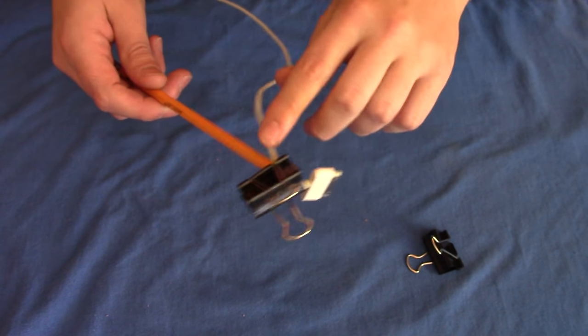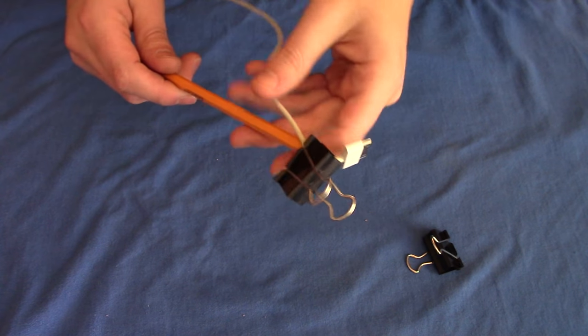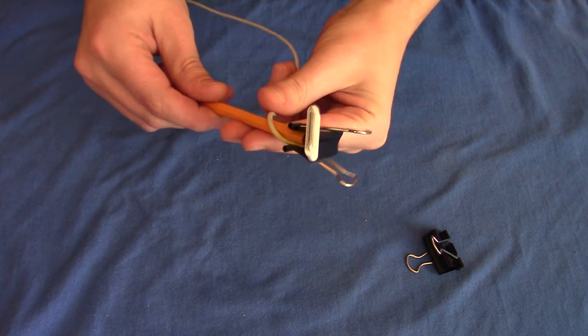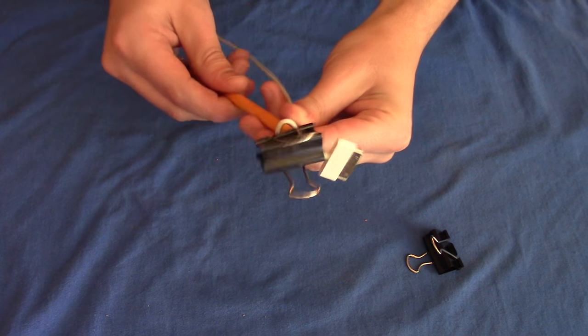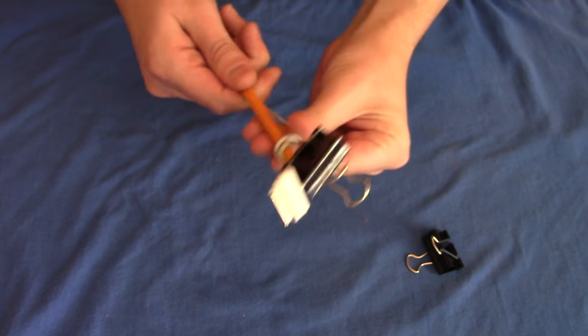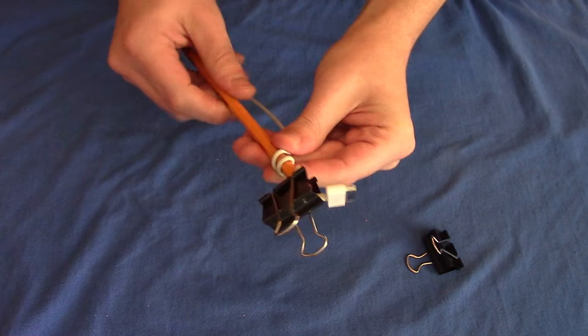We begin by clamping the cable to the pencil where you want the spiral to start. And then just slowly, turn by turn, just like making a spring, we start to rotate it.